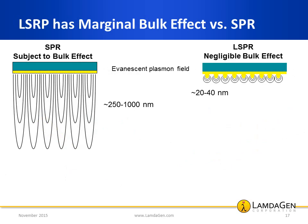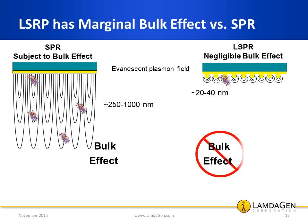A second key difference between SPR and LSPR becomes particularly notable in biosensing applications: the sensing volume of their respective plasmon fields, captured by what is referred to as the bulk effect. Due to the much larger plasmon field of SPR — up to 1,000 nm versus LSPR's 40 nm — biomolecules not actually bound at the sensor surface can be detected in SPR, causing a bulk effect or false positive reading, as depicted by the three unbound biomolecules shown in the sketch. In contrast, in LSPR, only molecules bound at the surface are captured by the localized plasmon field; the others are invisible to the sensor and do not contribute to the signal. Thus, LSPR has marginal bulk effect.